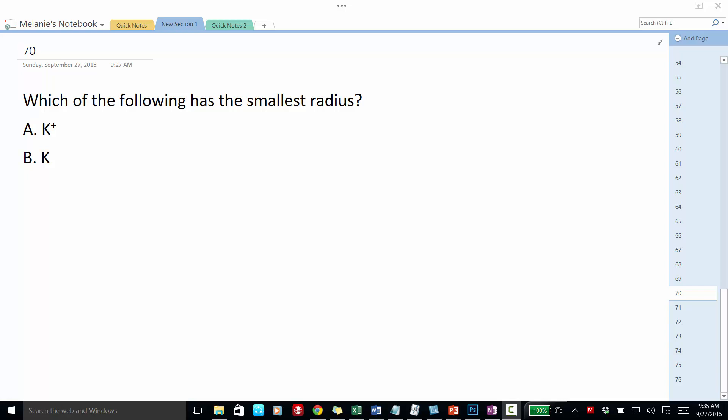This is Melanie Fine of Chem in 10. Today's question of the day is, which of the following has the smallest radius? We have potassium ion and potassium.